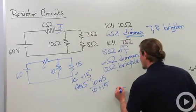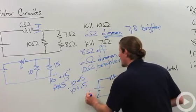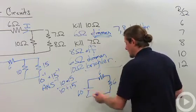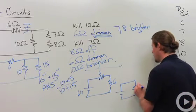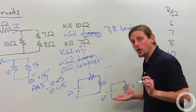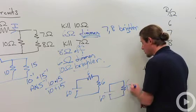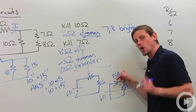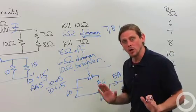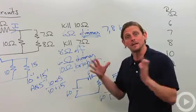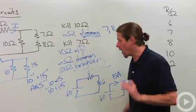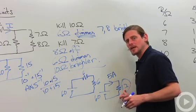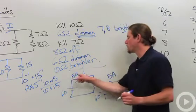So we end up with 6 ohms from the parallel combination and the original 6 ohm resistor in series, giving a total effective resistance of 12 ohms with the 60 volt battery. Now, how much current is going through this 12 ohm effective resistor? With a potential difference of 60 volts across it, I = V/R gives us 5 amps. In series, current is the same, so we've got 5 amps going through both the effective 6 ohm parallel combination and the physical 6 ohm resistor.